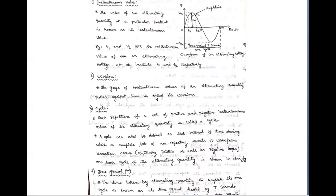Coming to the definition of waveform: the graph of instantaneous values of an alternating quantity plotted against time is called its waveform.